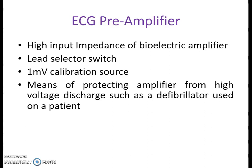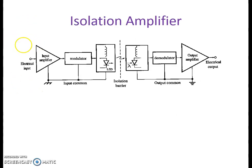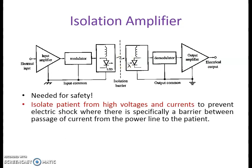The preamplifier should have a means of protecting the amplifier from high voltage discharges such as from a defibrillator used on the patient. Sometimes the preamplifier will also have an isolation amplifier. In the isolation amplifier, on one side we have electrical input and on the other side we have electrical output. Both sides — input and output — are isolated from each other by means of an optical arrangement. This arrangement is specifically needed for safety. It isolates the patients from high voltages and currents in order to prevent electrical shock, creating a barrier between the passage of current from the power line to the patient.